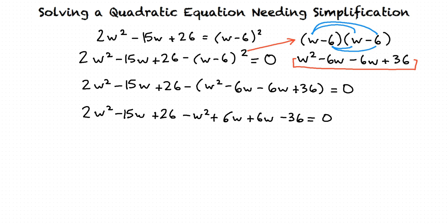Then after combining all the like terms, our final simplified quadratic equation is w squared minus 3w minus 10 equals 0.